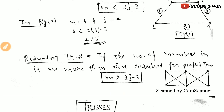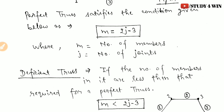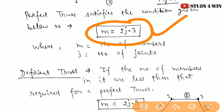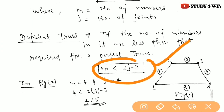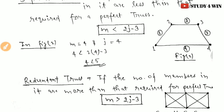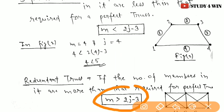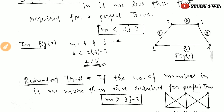The figure shown in the right corner satisfies the condition of a redundant truss. In summary: the equation of a perfect truss is m = 2j − 3; the equation of a deficient truss is m < 2j − 3; and the equation of a redundant truss is m > 2j − 3. In the next video, I will tell you about the methods to solve numerical problems of trusses and the different types of methods used to solve truss problems.